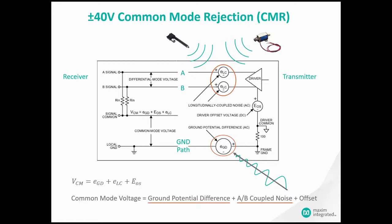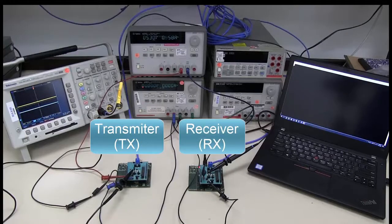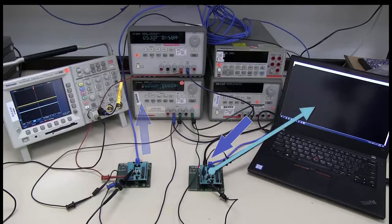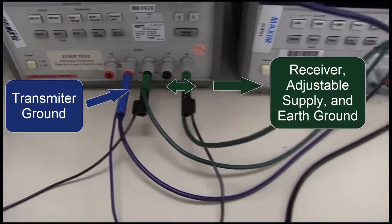I demonstrate this common mode rejection by effectively raising the transmitter's ground to plus 40 volts with respect to the receiver's ground. Here we have the transmitter on the left and receiver on the right. The transmitter is programmed to send the same hex message about every two seconds. The receiver is programmed to send the received message through the microcontroller's USB port to the terminal on my laptop. The receiver, bottom adjustable power supply, and oscilloscope are all referenced to earth ground.